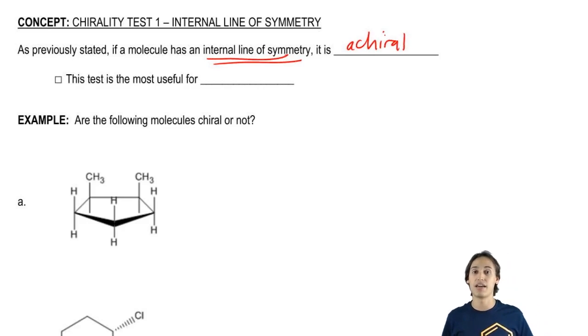You guys remember that? That basically means that it has the same exact mirror image as itself because it has that line of symmetry, so then it's not chiral.